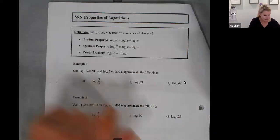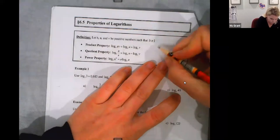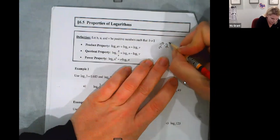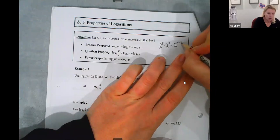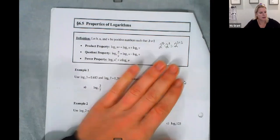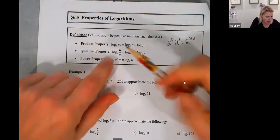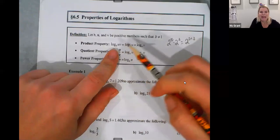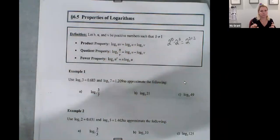The product property. The product property with an exponent is like 2 to the 5th times 2 to the 3rd, and the answer is 2 to the 5 plus 3. Well, the product property in logarithms also has addition in it. And basically, log base b of u times v means I'm going to add u plus v and separate it out into two logs.